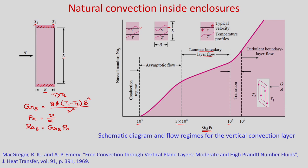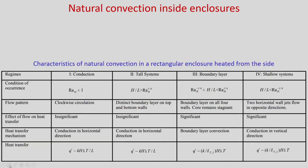This is the laminar boundary layer flow regime. Between 10⁶ and 10⁷ it will be transition, and after Rayleigh number 10⁷ you will get turbulent boundary layer flow. We will not go into the details of scale analysis derivation, but we will show what is the scale of thermal boundary layer thickness, velocity, and heat flux. For details you can refer to the heat transfer book by Adrian Bejan.